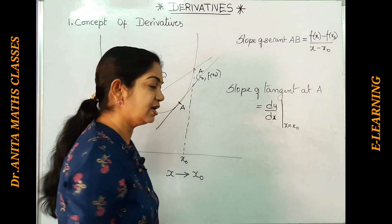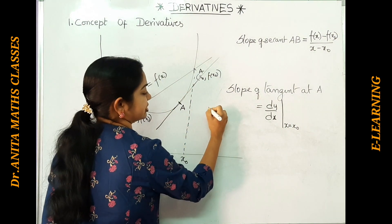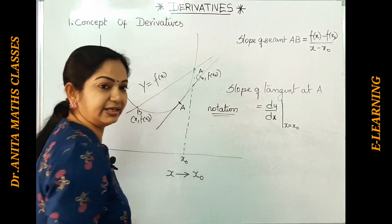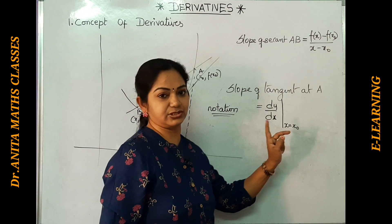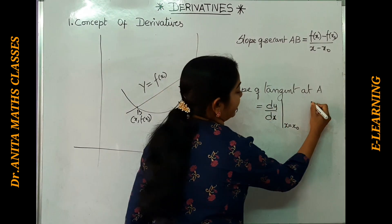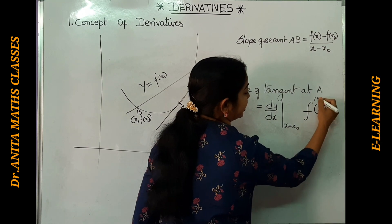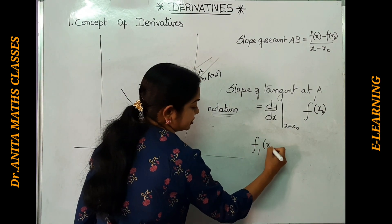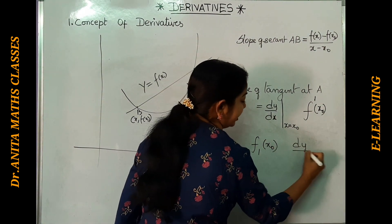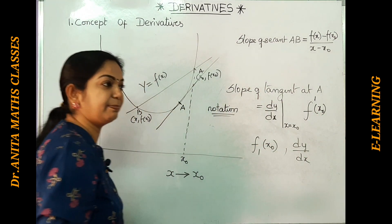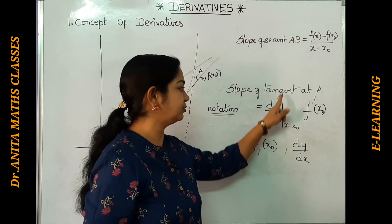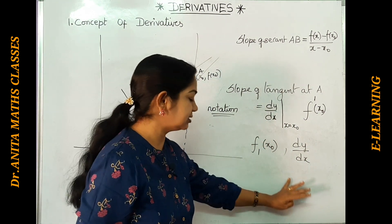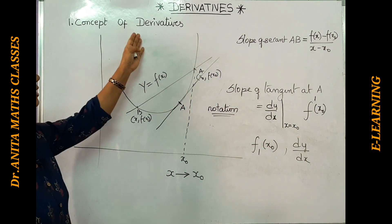The notation for the derivative is dy/dx at x = x₀. We also denote it as f'(x₀), or f¹(x₀), or simply dy/dx — these are all representations of the derivative at the rate of x tending towards x₀. This is the geometrical interpretation of derivatives.